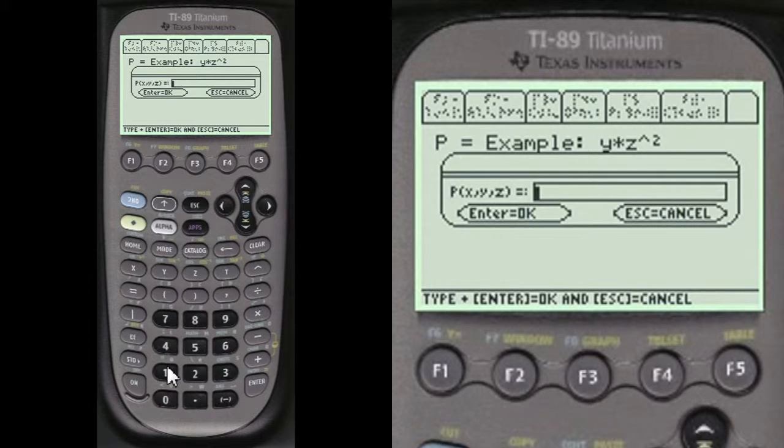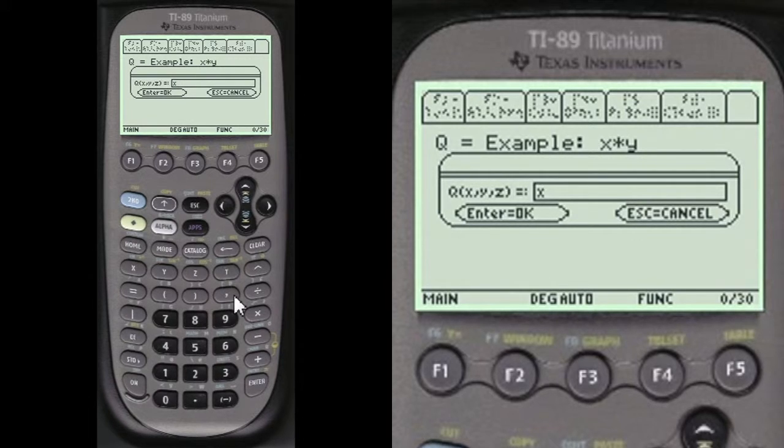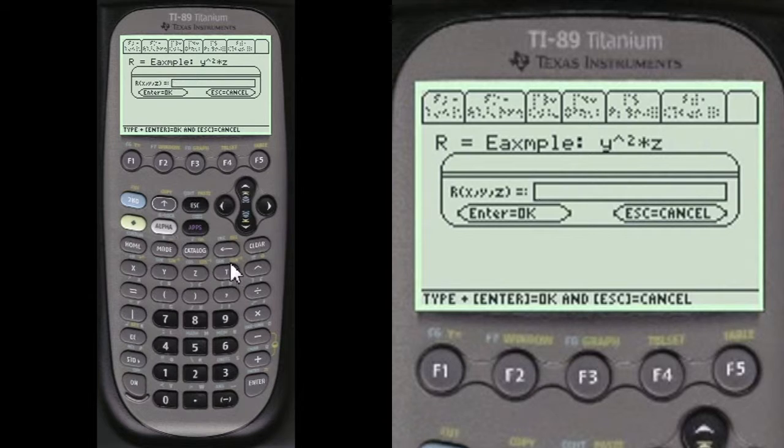And we're going to put in 2 times y. And then alpha. x squared plus 2 times z times y. And then alpha y squared.